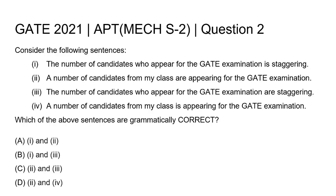This is the question from GATE 2021, Mechanical Engineering Set 2. Consider the following sentences. Sentence 1: The number of candidates who appear for the GATE examination is staggering. Sentence 2: A number of candidates from my class are appearing for the GATE examination. Sentence 3: The number of candidates who appear for the GATE examination are staggering. Sentence 4: A number of candidates from my class is appearing for the GATE examination.